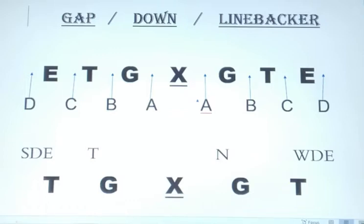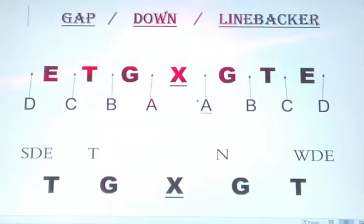The first thing I'm going to talk about are the rules of gap down linebacker. In between the center and the guard, that is known as A gap. Between the guards and the tackles, that is known as B gap. Between the tackle and the tight end, that is known as C gap. Outside the tight ends is known as D gap.